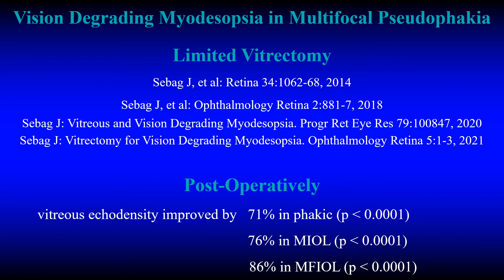Limited vitrectomy has been established in various studies as a safe and effective way to cure vision-degrading myodesopsia, but what do we know about its effects in eyes with multifocal IOLs? Postoperatively, vitreous ecodensity improved by 71 percent in the phacic eyes, 76 percent in the eyes with monofocal intraocular lenses, and 86 percent in the eyes with multifocal intraocular lenses.